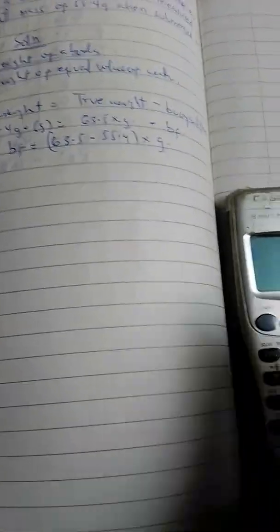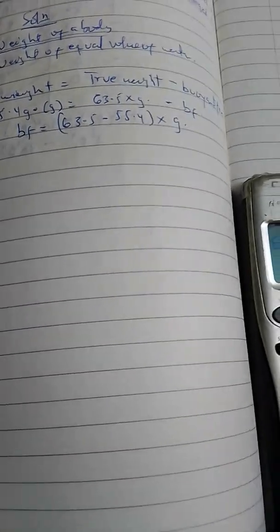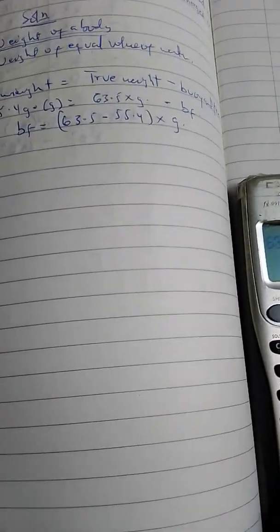Let's see what we are getting. When we subtract 55.4 from 63.5, we get 8.1. Our buoyant force is equal to 8.1 times gravity.